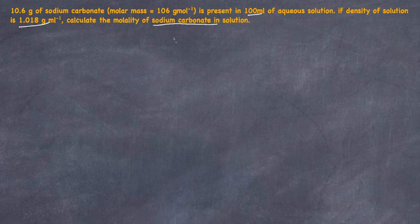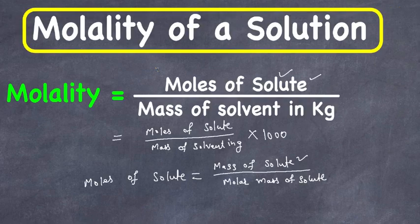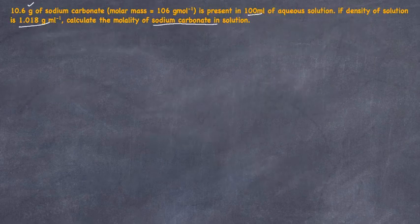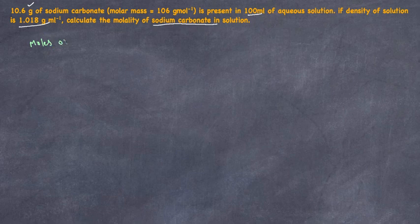First of all, they gave us the mass of the solute — they didn't give us the moles of the solute. Since the definition requires moles of the solute to calculate molality, let's calculate the moles of the solute first. Moles of solute is basically equal to the mass of the solute divided by the molar mass of the solute.